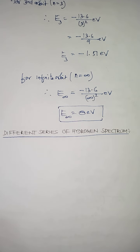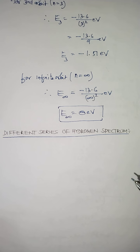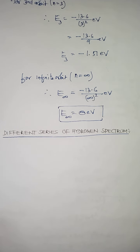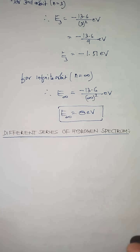As per Bohr's theory of hydrogen atom, when electrons jump from any of the higher orbit to any of the lower orbit, that atom emits radiation — energy in the form of electromagnetic radiation. And every electromagnetic radiation has a definite frequency and definite wavelength. So we have a series of spectrum that can be observed when electrons jump from any higher orbit to any lower orbit.